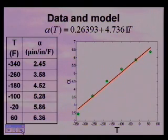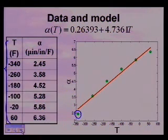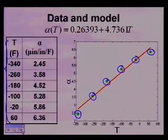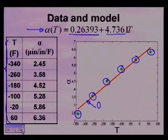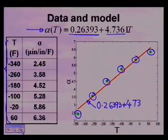The example which we have taken here is of these particular six data points right here. By using the regression formulas, we are able to get alpha T — alpha as a function of temperature — to be that straight line. This is the y-intercept and this is the slope, and the line which has been found is 0.26393 plus 4.7361 times T.